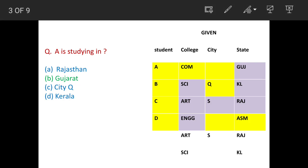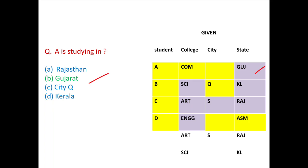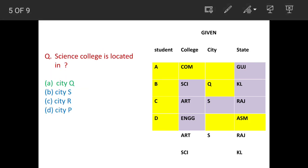First question: A is studying in — answer is option B, Gujarat state, as per the table. Next question: science college is located in — as per the table, it is in city Q, so option A is the answer.